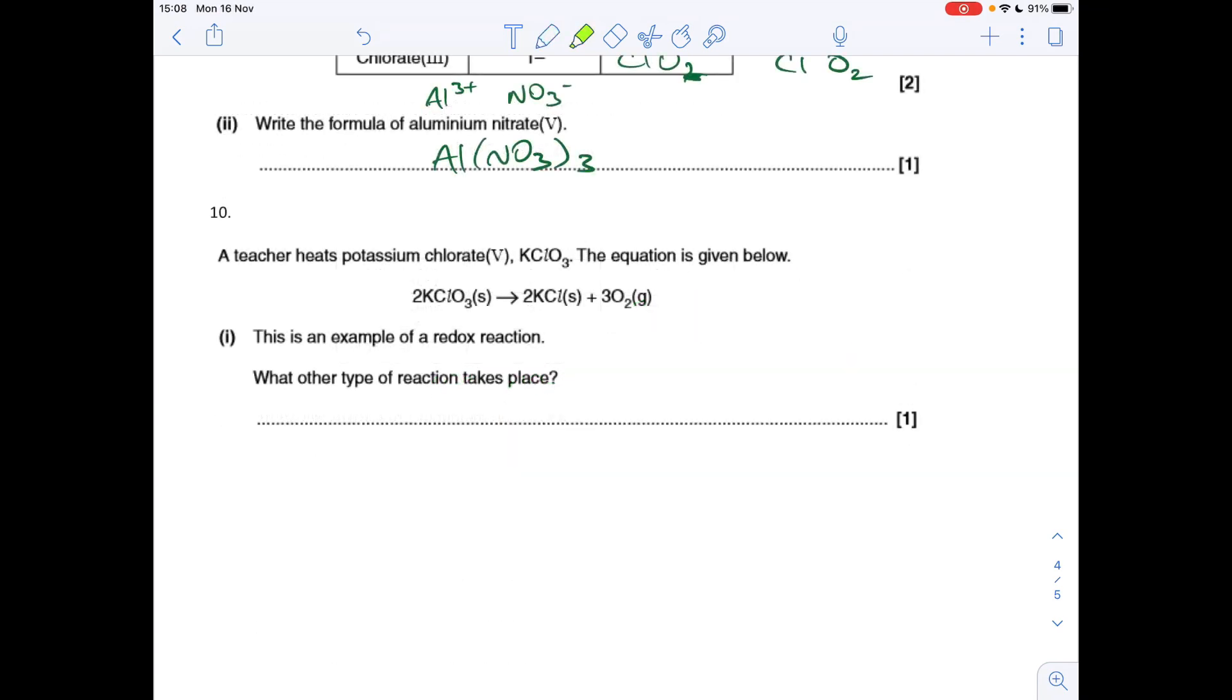Final question, it's not really testing our knowledge of redox reactions and oxidation number, it's testing our knowledge of different reaction types. So key bits of information here, well, the teacher's heated the potassium chlorate(V). Let's look at what's happening to it. It starts out like this and it's going to two substances, so it's broken down. So what do we call that? Thermal decomposition.